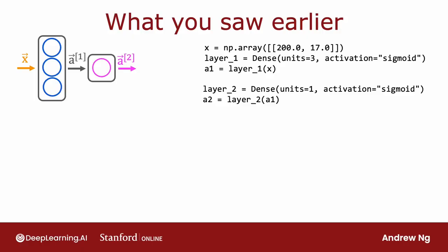What you saw previously was if you want to do forward prop, you initialize the data X, create layer one like so, then compute A1, then create layer two, and compute A2. So this was an explicit way of carrying out forward prop one layer of computation at a time.